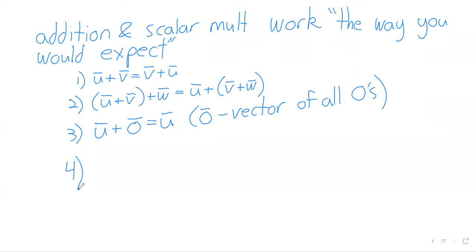For real numbers, if you add a number to its negative version, you get zero. Three plus negative three is zero. So vectors have that exact same property. And by negative u, I mean the scalar product of negative one and u.